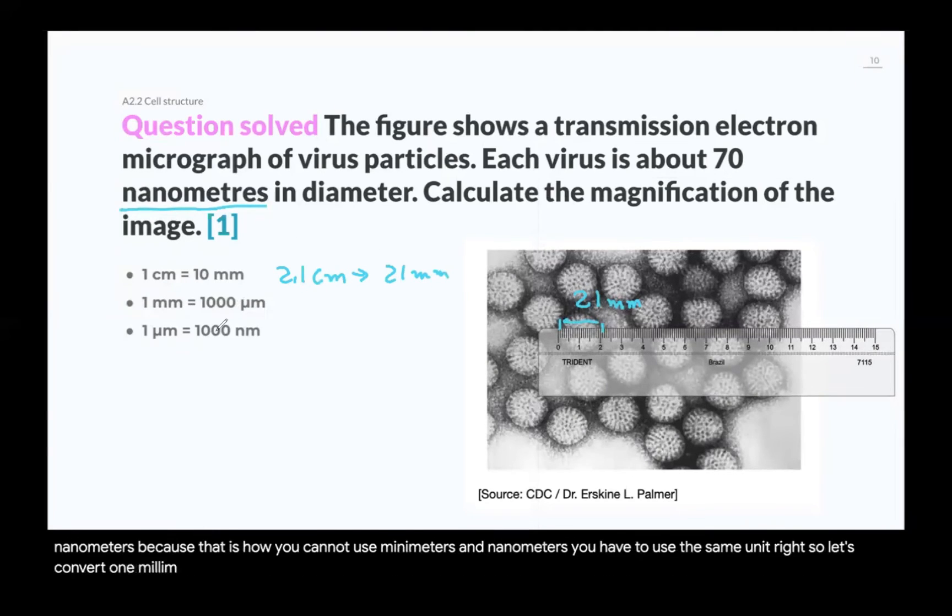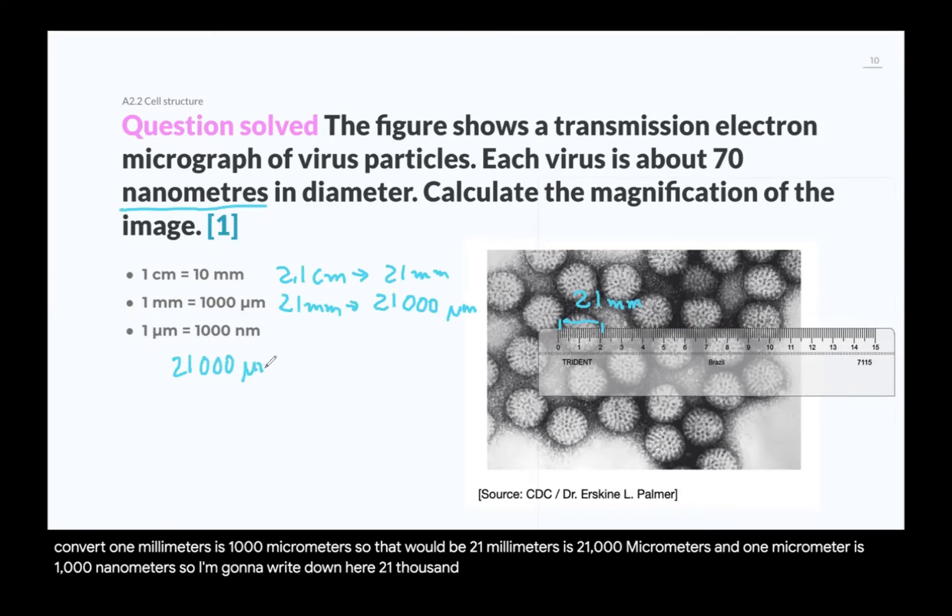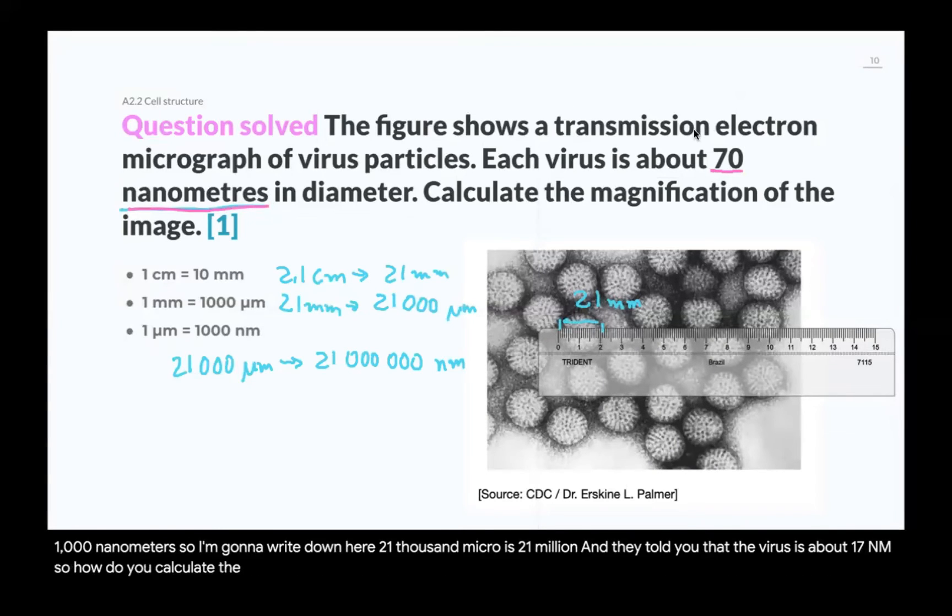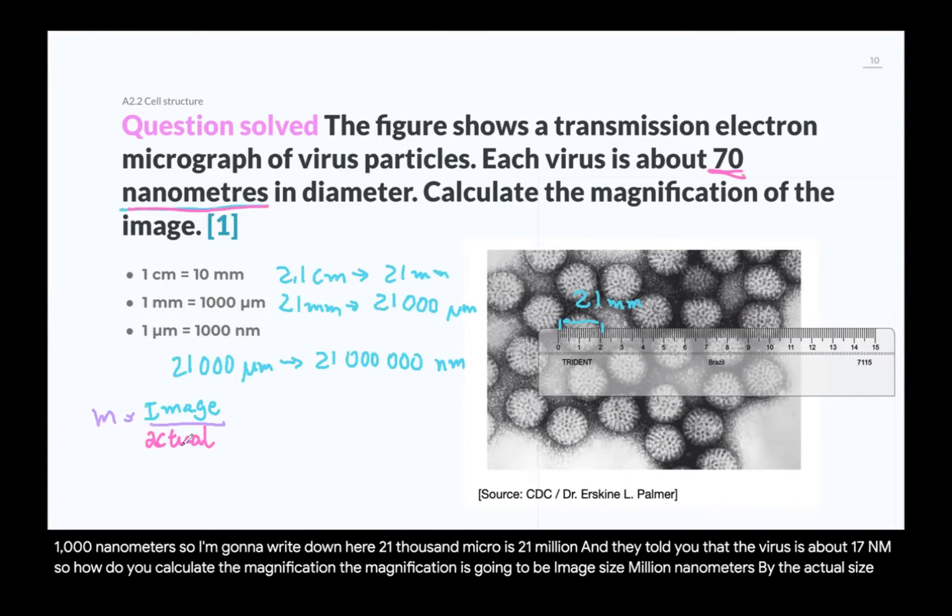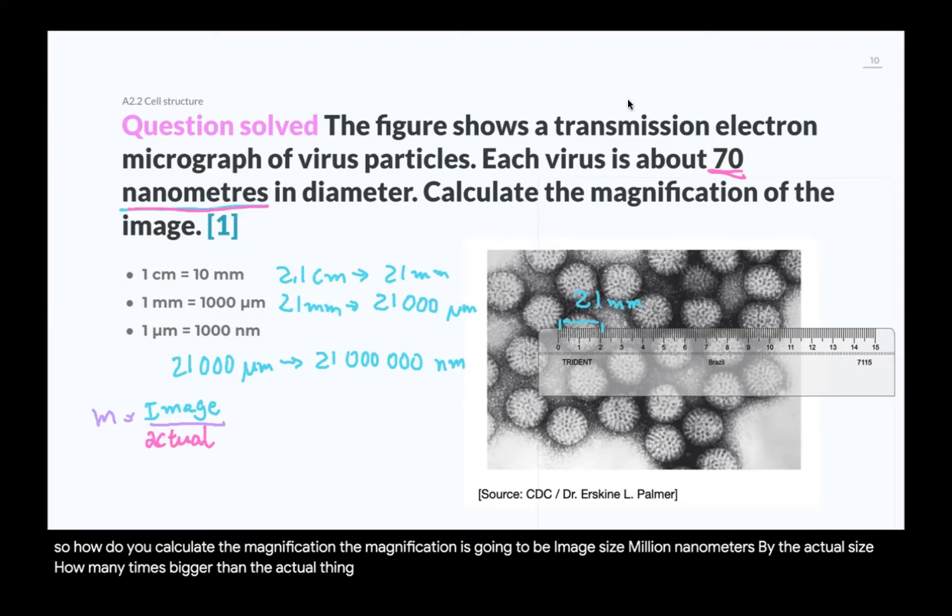Let's convert: 1 millimeter is 1,000 micrometers. So that would be 21 millimeters is 21,000 micrometers. And 1 micrometer is 1,000 nanometers. So I'm going to write down here, 21,000 micro is 21 million nanometers. Now, we have the same unit. And they told you that the virus is about 70 nanometers. So how do you calculate the magnification? The magnification is going to be the image size. In our case, it's 21 million nanometers divided by the actual size, which is 70 nanometers.